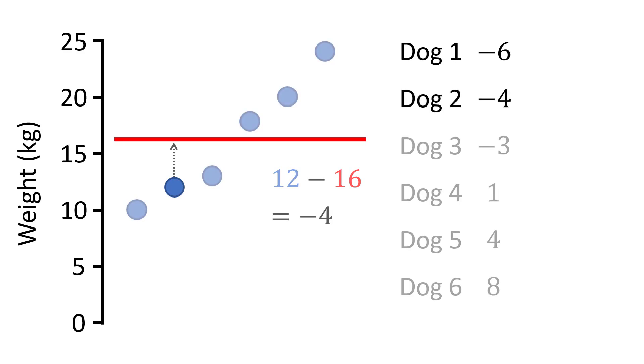And this process is repeated for the rest of the data points. The next step in calculating the variance is to square each of these newly created values. So if we take dog 1, negative 6 multiplied by negative 6 becomes 36.